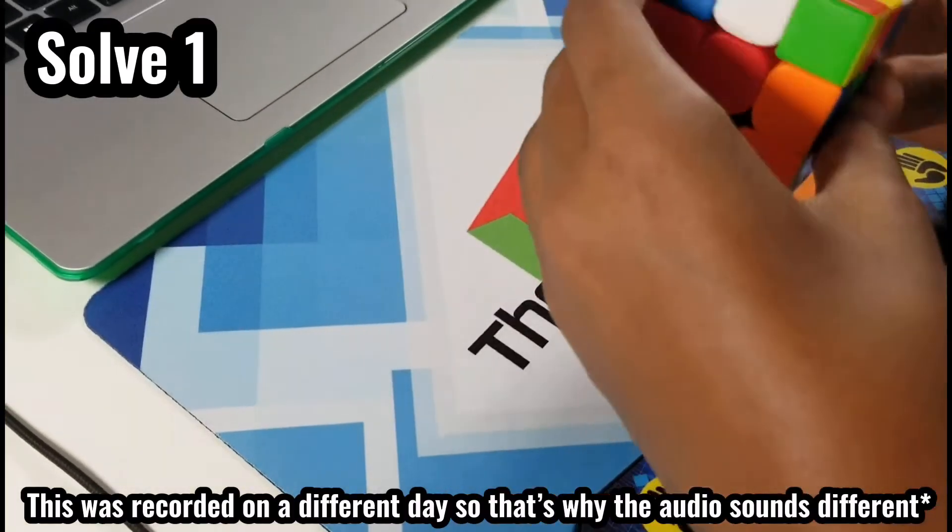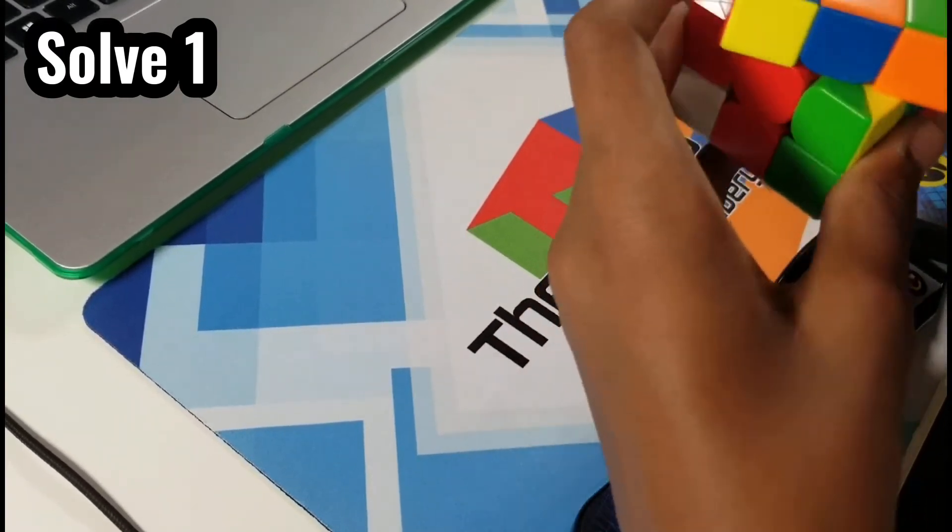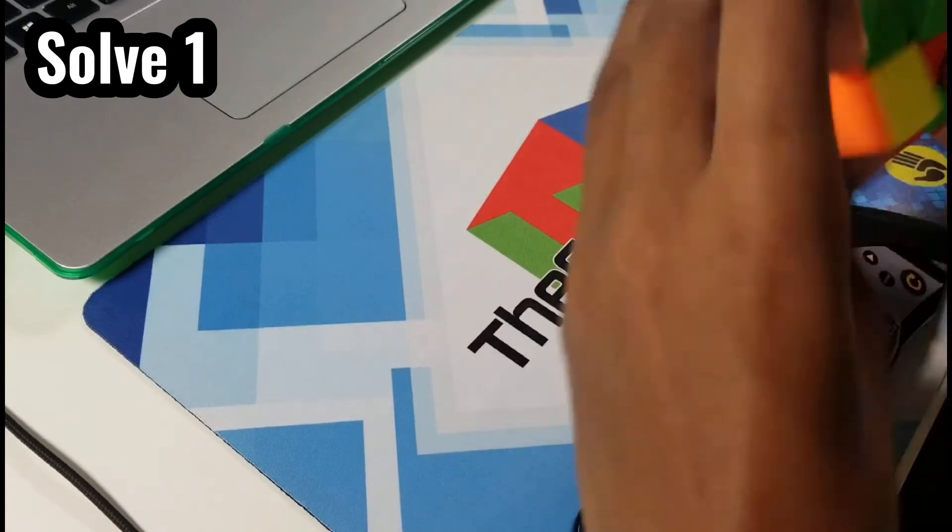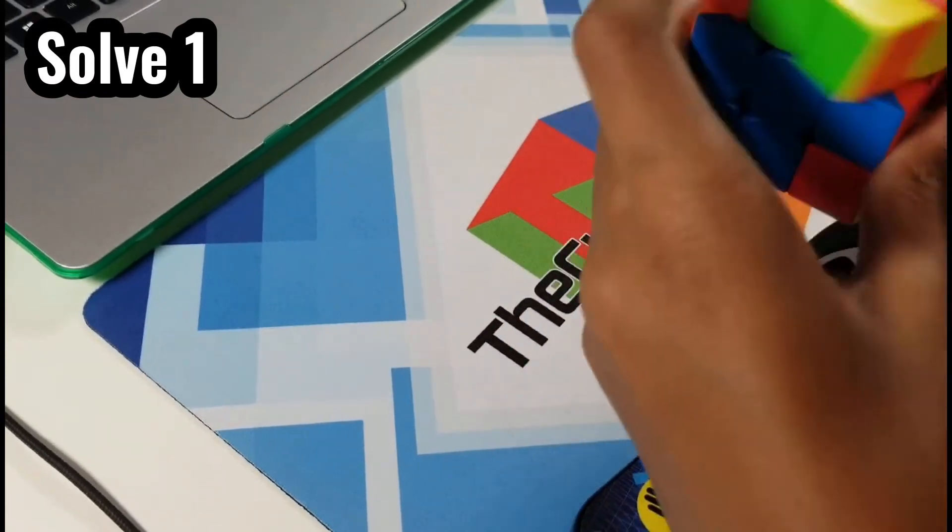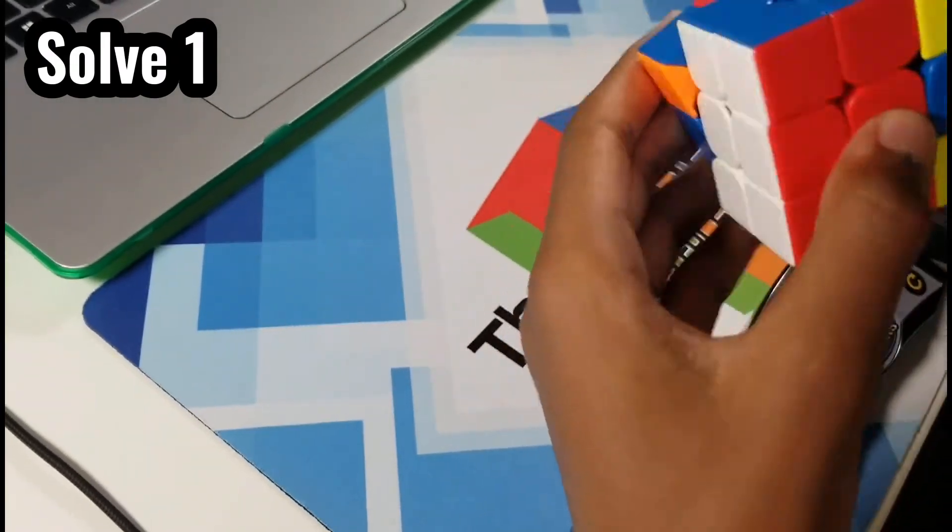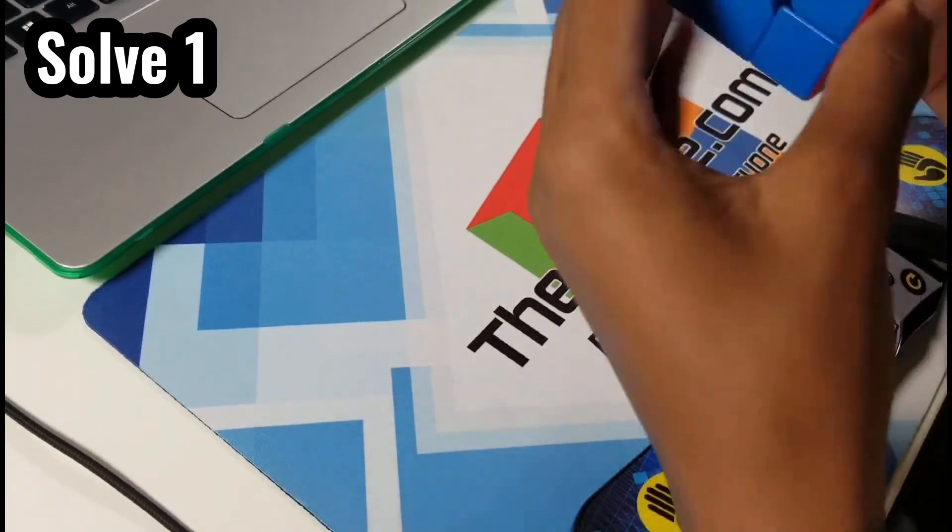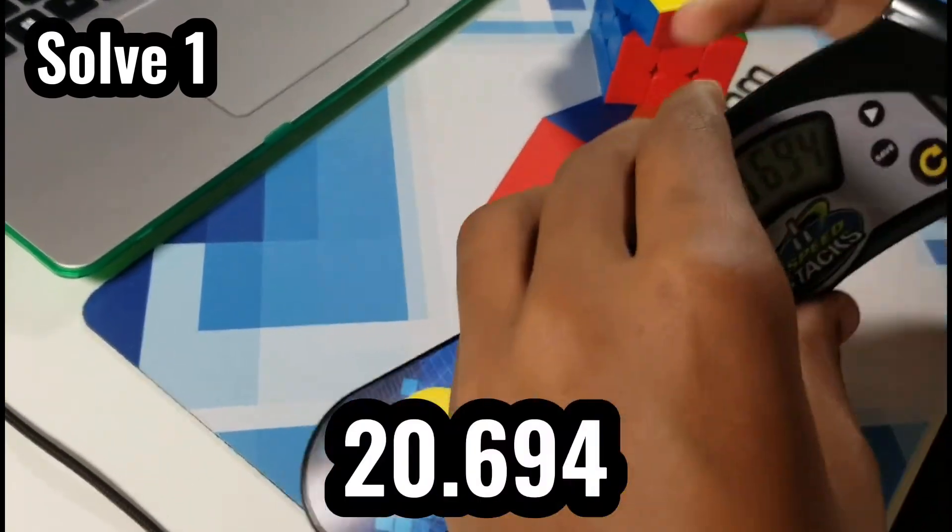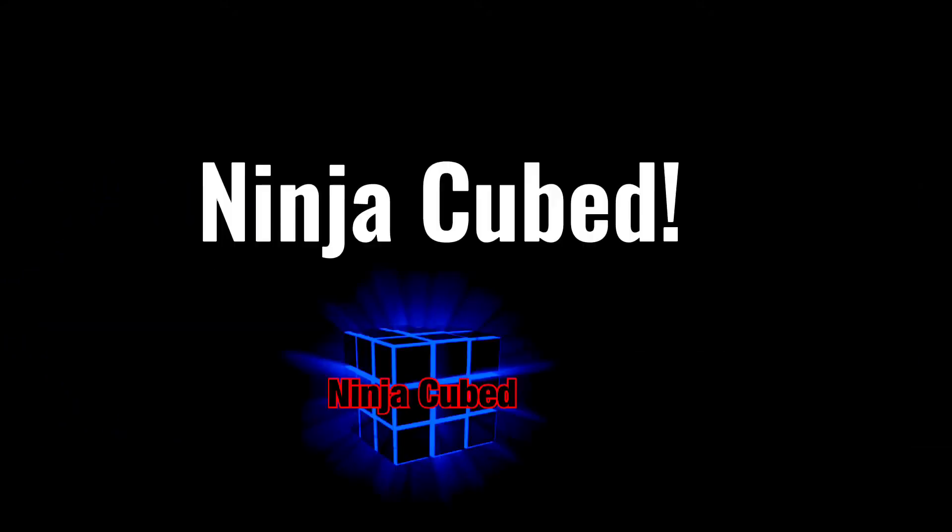Okay, so the low down on cubing starts his first solve. As you can see, an okay cross, but not quite as good as mine, unfortunately. Now moving on to F2L, some pretty efficient F2L pairs, doing some pretty nice solutions. Now onto OLL and finally onto PLL with a UA perm for a total of 20.694. The winner of the first round is Ninja Cubed.